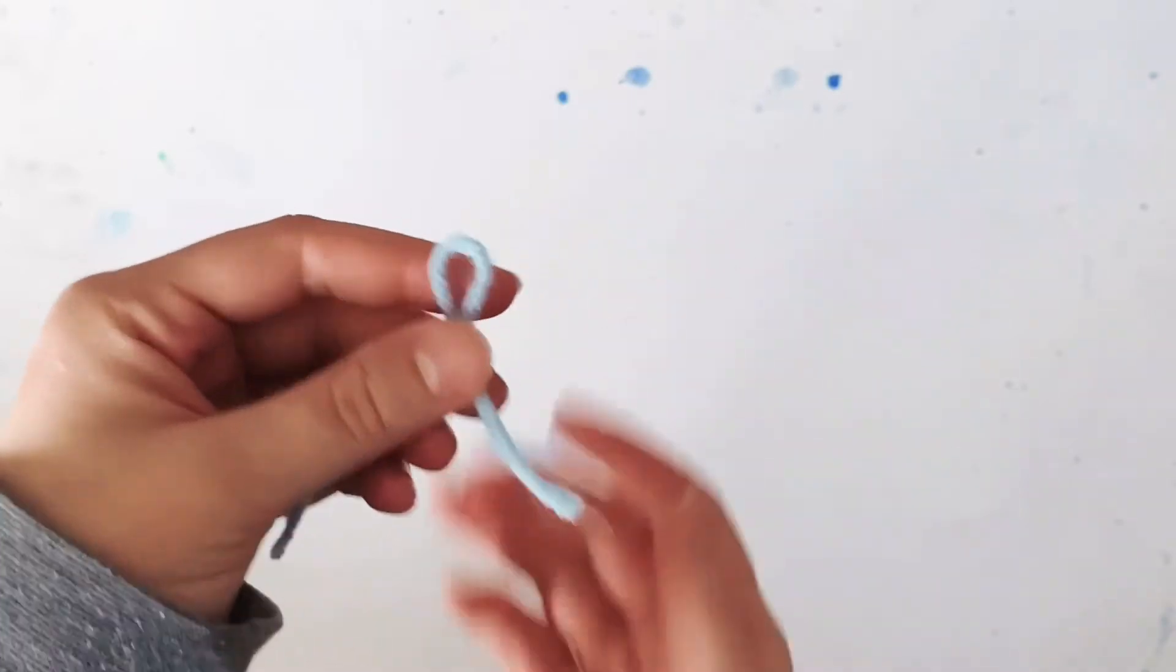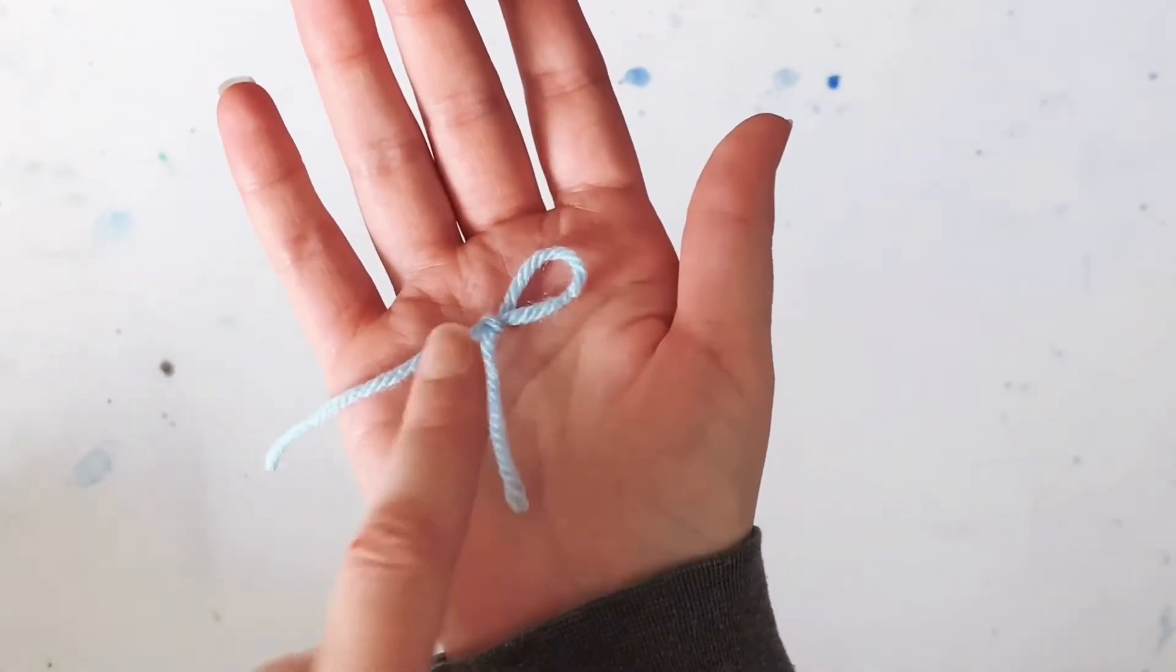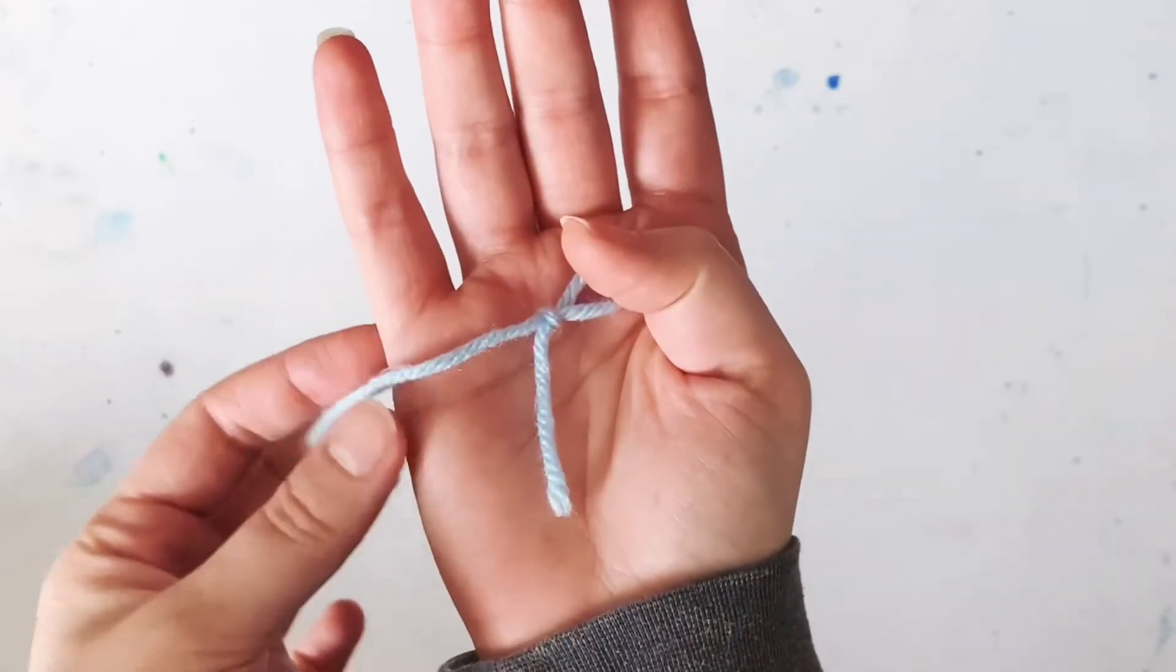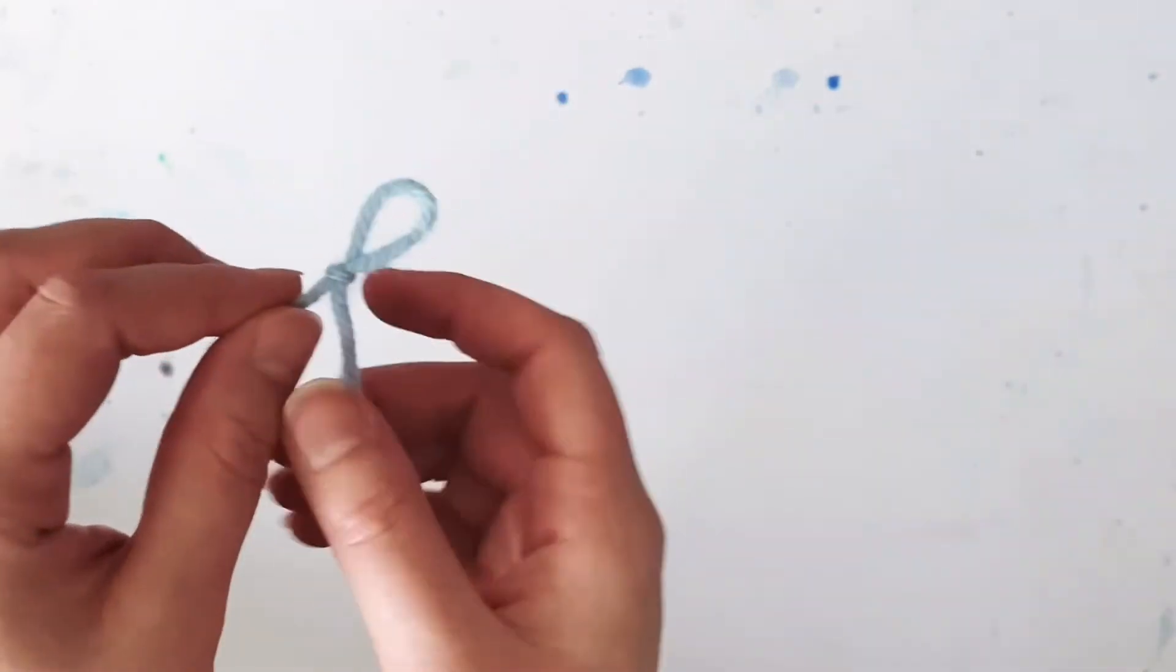The slip knot looks like this. You usually have the tail or the short end, and the part that leads to your skein or ball of yarn that you're working with.